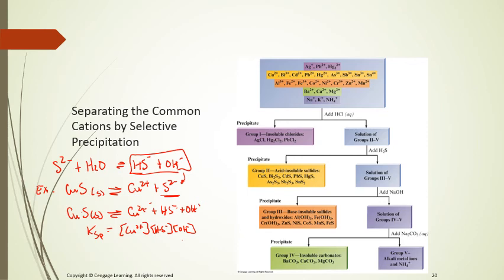To separate group 3 further, add H2S to get rid of the first part. For group 2, add NaOH to precipitate insoluble hydroxides. Finally, add carbonates to separate the remaining ions. This flowchart gives a systematic method to separate out the different components of the solution.